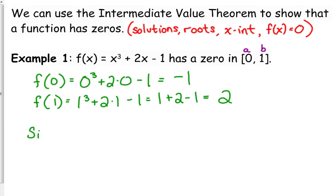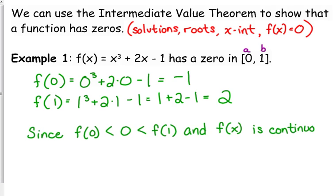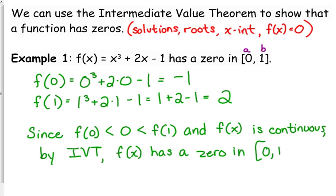Now, let's write this in a mathematical way. I would say since f of zero is less than zero, which is less than f of one. And f of x is continuous, by IVT, you can use the abbreviation IVT, the intermediate value theorem. f of x has a zero in [0, 1]. That is the way to write it in a complete sentence. If this were to be a free response question, this should be your response.